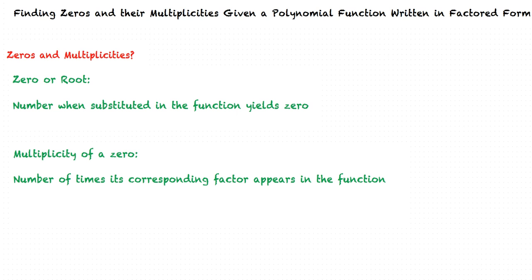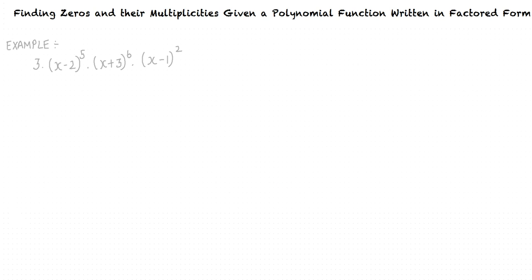Can we do an example? Let us consider an example. We have a polynomial function in its factored form: 3 times (x minus 2) raised to the 5th power, times (x plus 3) raised to the 6th power, times (x minus 1) raised to the 2nd power. We are required to calculate the zeros and their multiplicities.